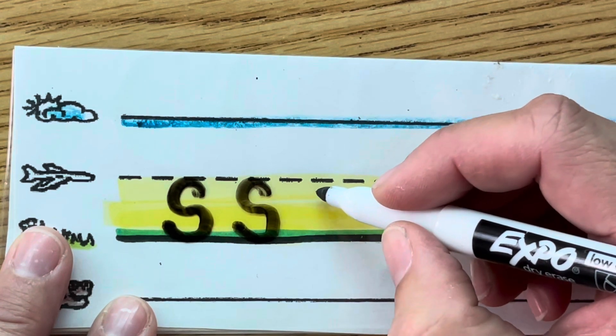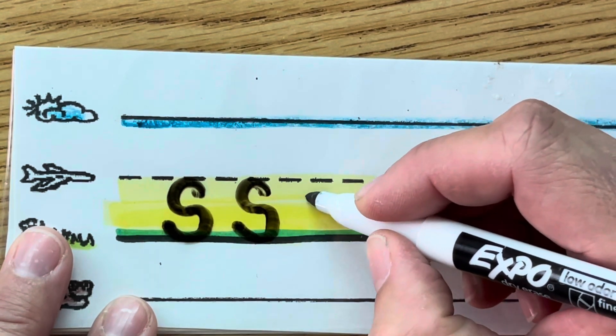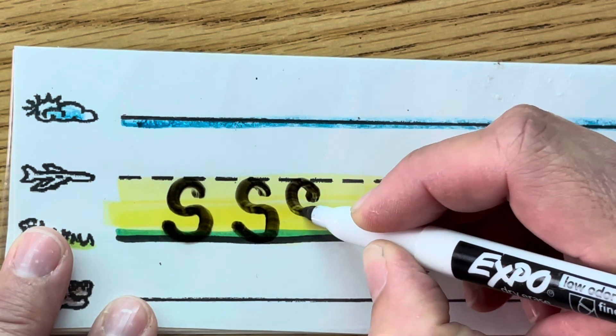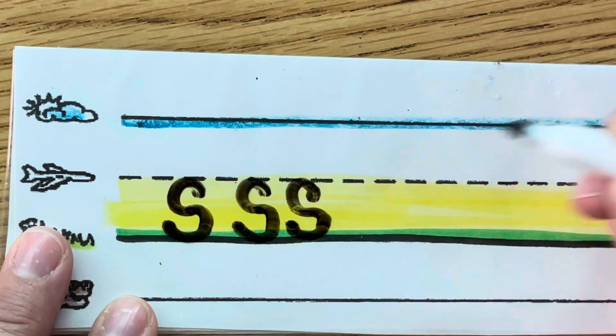Let's do another one. Remember where we start? Right below the dots. Up to make our C, and then over and around in the grass.